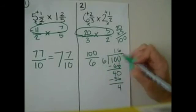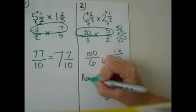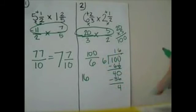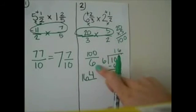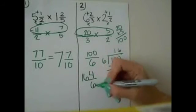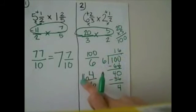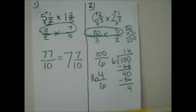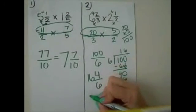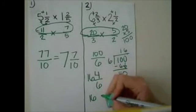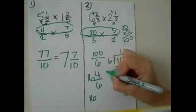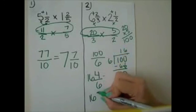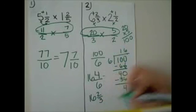Alright, so our whole number is 16, and our remainder is 4, so we want to put that on top of here, and then you want to use the same denominator, so it's 16 and 4 sixths. But we can still reduce that, so we're going to do 16, and if we reduce that by half, it would be 2 thirds. So 16 and 2 thirds would be your answer.